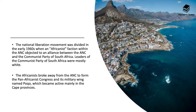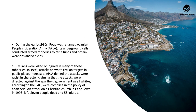The National Liberation Movement was divided in the early 1960s when an Africanist faction within the ANC objected to an alliance between the ANC and the Communist Party of South Africa, whose leaders were mostly white. The Africanists broke away from the ANC to form the Pan-Africanist Congress and its military wing POQO, which became active mainly in the Cape Provinces. During the early 1990s, POQO was renamed the Azanian People's Liberation Army, APLA. Its underground cells conducted arms robberies to raise funds and obtain weapons and vehicles, and civilians were killed or injured in many of these robberies. In 1993, attacks on white civilian targets in public places increased. APLA denied the attacks were racist in character, claiming they were directed against the apartheid government, as all whites, according to the PAC, were complicit in the policy of apartheid.